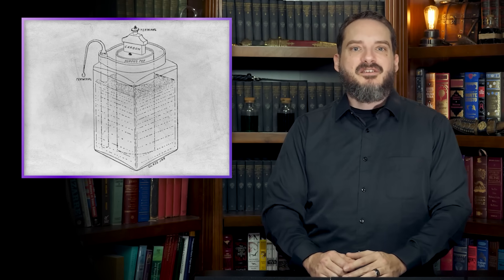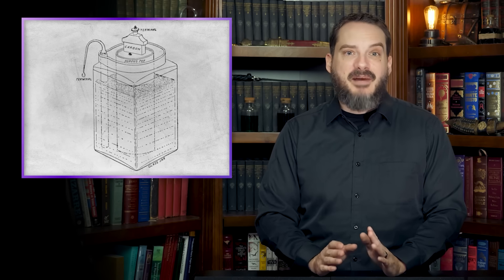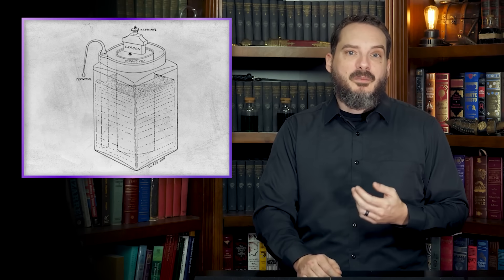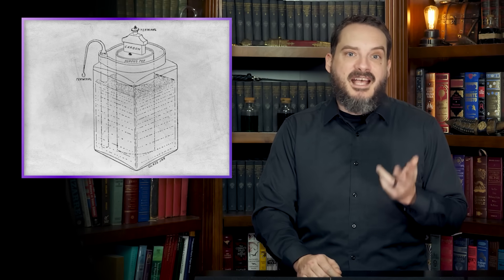In 1886, German inventor Karl Gassner solved this problem by replacing the liquid electrolyte with a paste-like mixture of ammonium chloride, plaster of Paris, and zinc chloride. This was combined with a carbon rod cathode and sealed in a zinc can that doubled as the anode, creating the first truly portable dry cell battery.